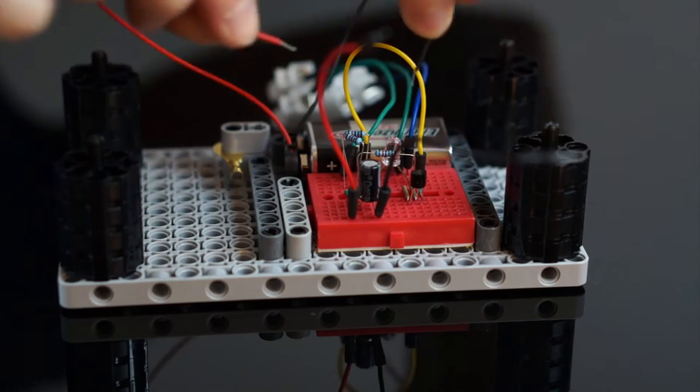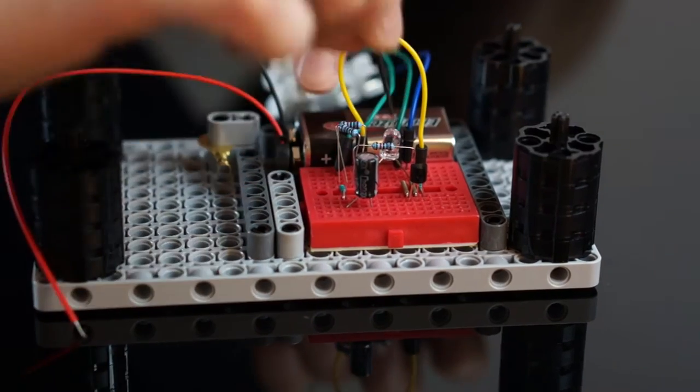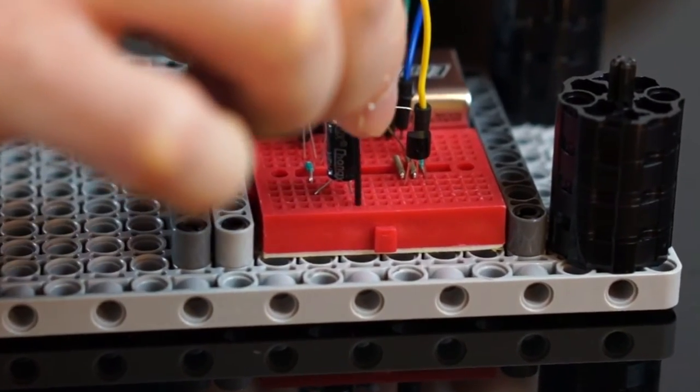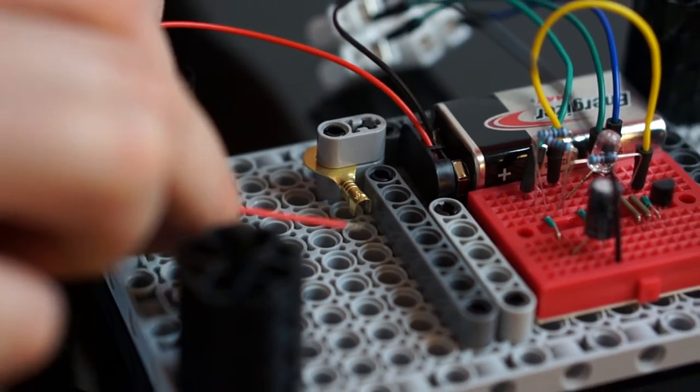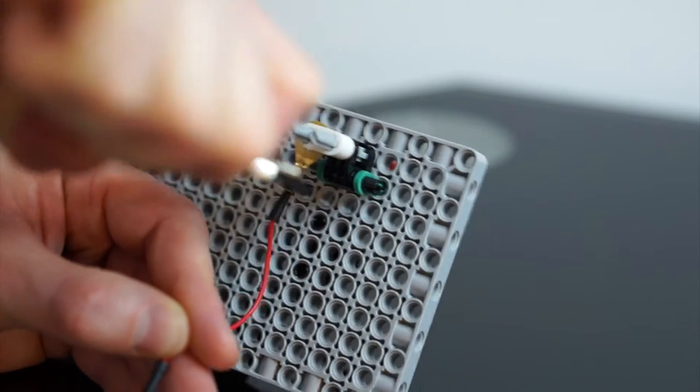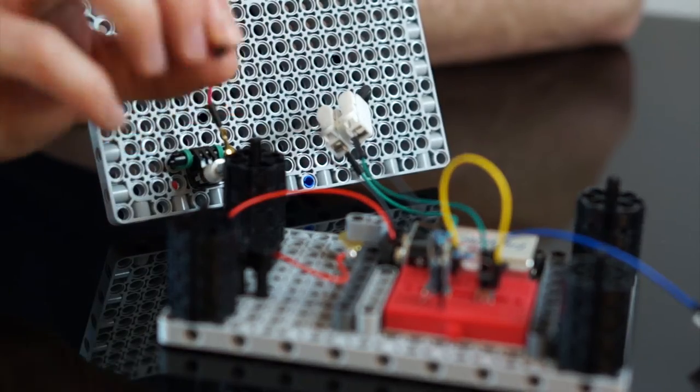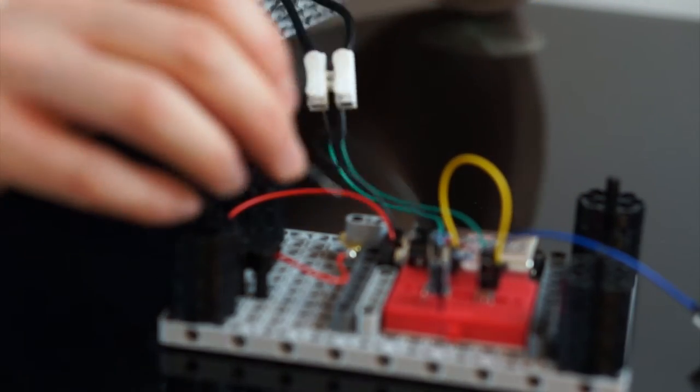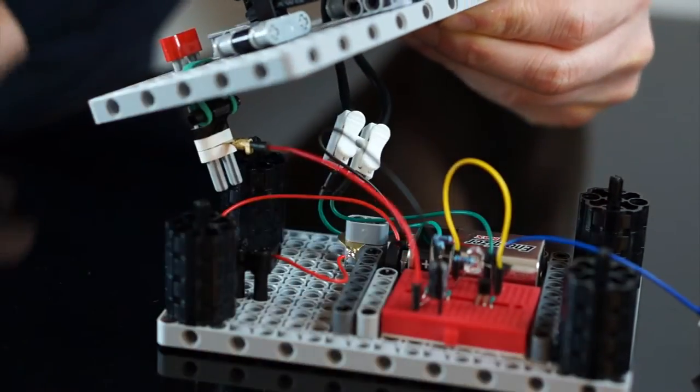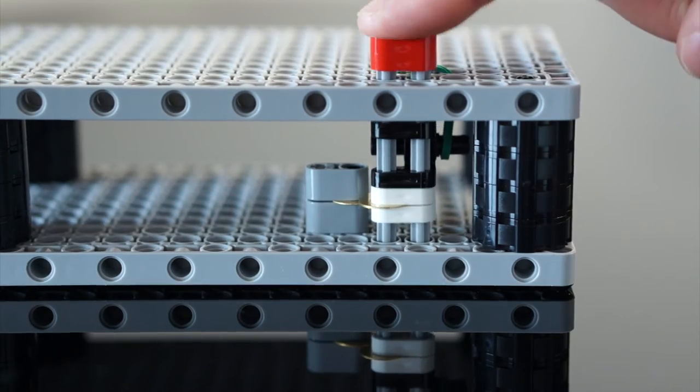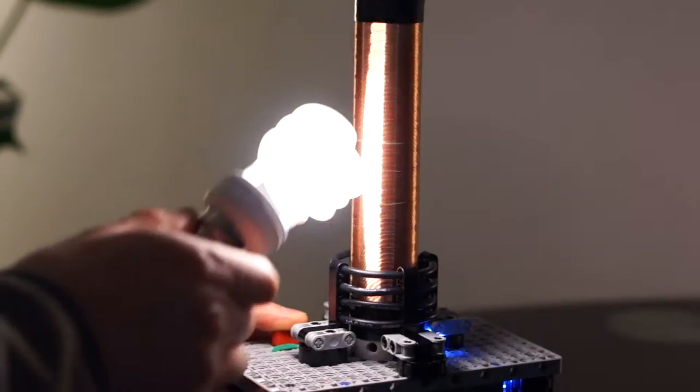I'll attach one lead of the battery to the board, and the other one to one of these switch plates. Then the other end of the switch plate will go to the board. When we press the button down, closing the loop, power will travel from the battery to the board.